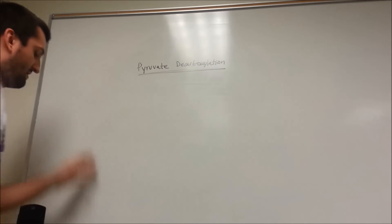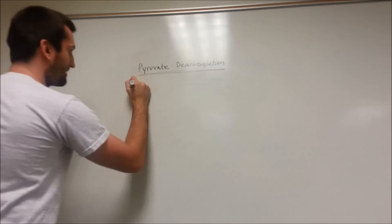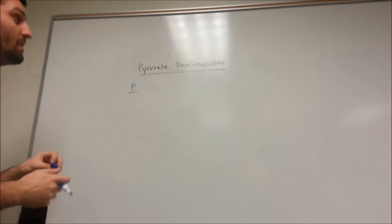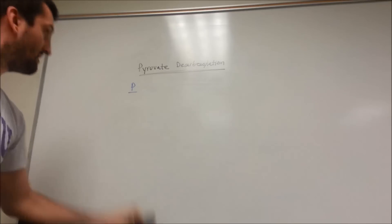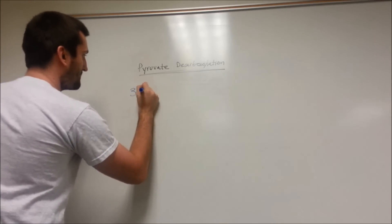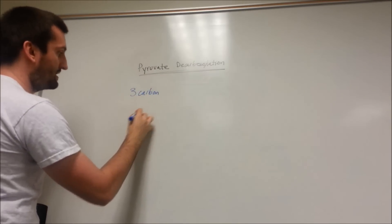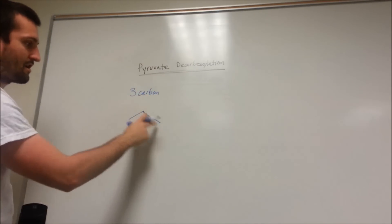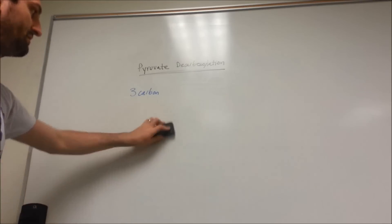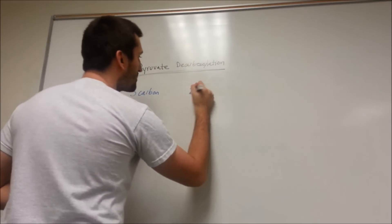Before we draw anything on the board, let's look at the name, pyruvate. So we're going to take a molecule of pyruvate. We're going to decarboxylate it. So I'm actually going to talk about the pyruvate molecule a little bit. It's going to be a 3-carbon structure. So there's going to be 1-carbon, 2-carbon, 3-carbon, however you want to draw it. It's going to be a 3-carbon structure. What we're going to end up with is going to be a 2-carbon structure.